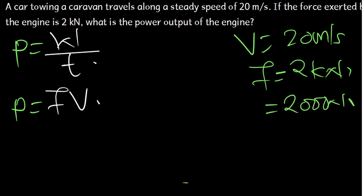From the data which we've been given, which formula is going to be suitable for us to find the power? We don't have the work, we don't have the time, so we can't use this. We have the force, 2000 newtons. We have the velocity too, 20 meters per second. Therefore, the best formula to use is power is equal to force times velocity.